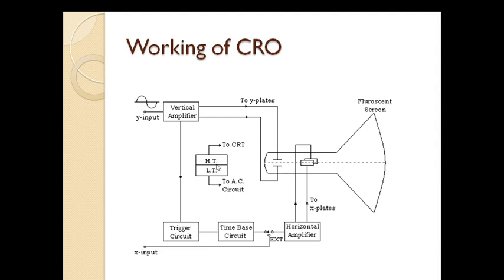In the block diagram we can see all seven parts of the CRO. The CRT has vertical and horizontal deflecting plates. The vertical deflecting plate is connected to the vertical amplifier which amplifies the signal and gives it to the Y-plates. The horizontal or X-plates are connected to the horizontal amplifier. The time-based circuit is connected to the horizontal amplifier to provide the sweep voltage to the X-plates. The trigger circuit is connected to both the time-based circuit and the vertical amplifier. High and low voltage power supplies are also shown.